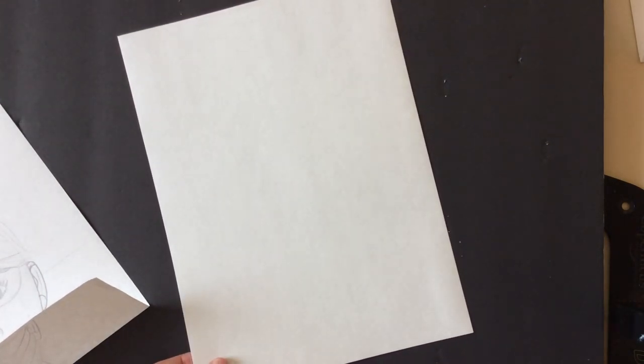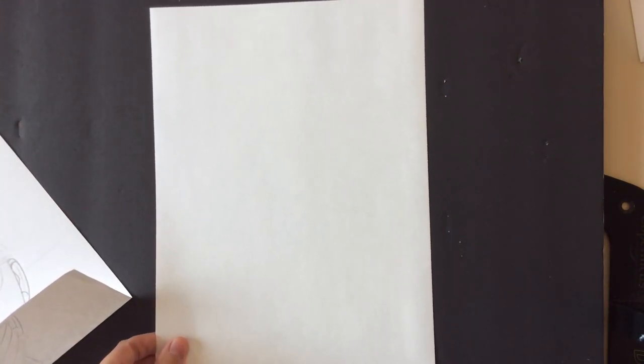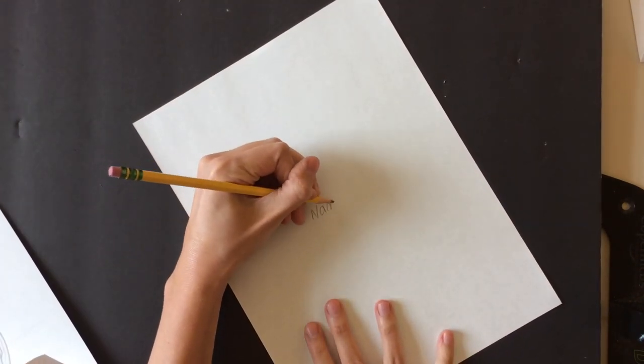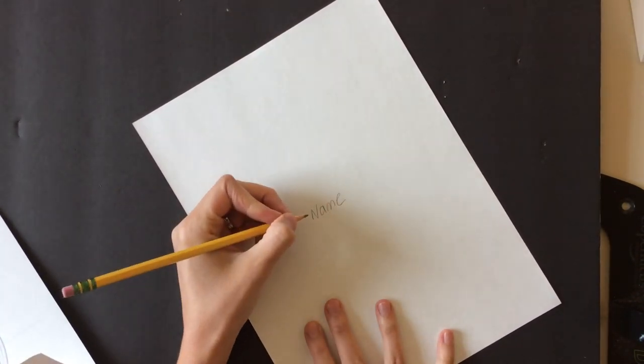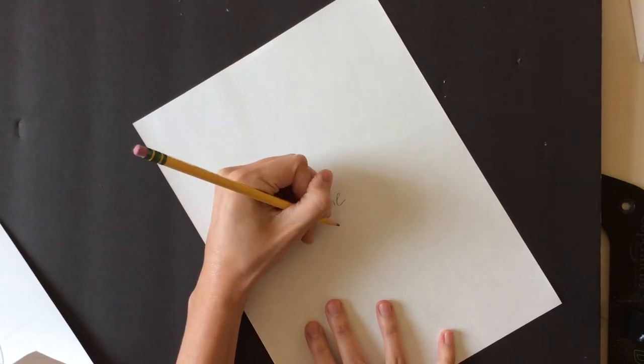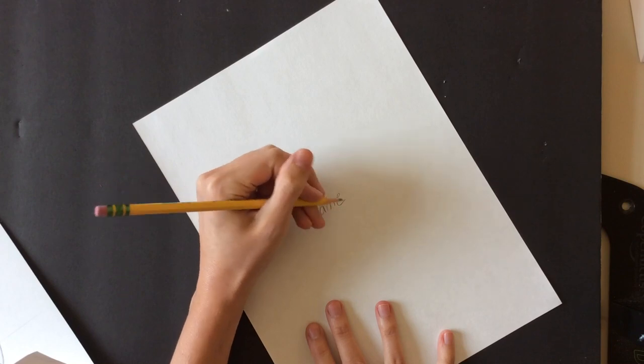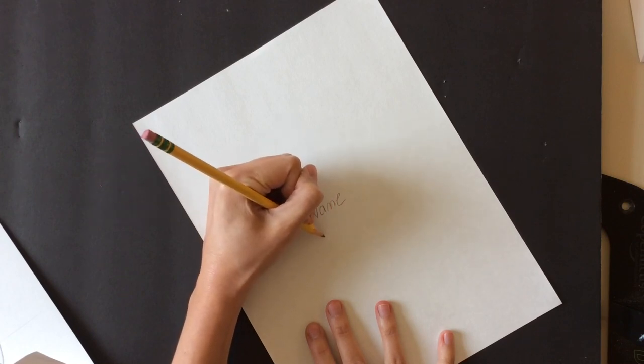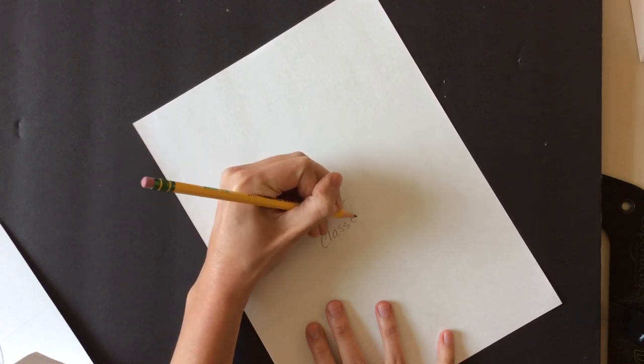So to start off, you're going to need a pencil and a piece of white paper. You can use plain computer paper if you like. I am using 9 by 12 inch drawing paper, but any type of white paper is totally fine. Now the first step is flip it over and please write your name and your class code on the back. So if you're 2L or 3F, whatever it is, write that on the back. Name and class code.